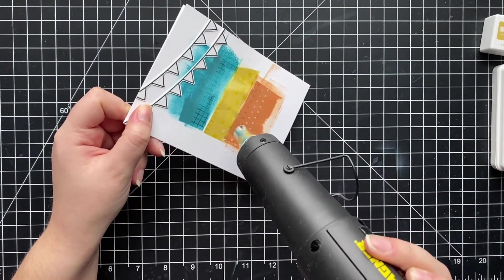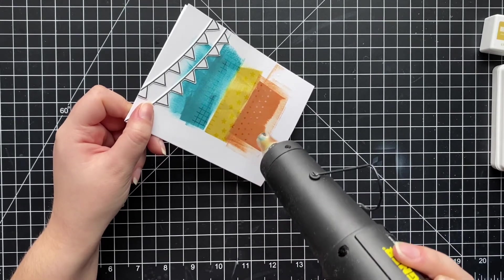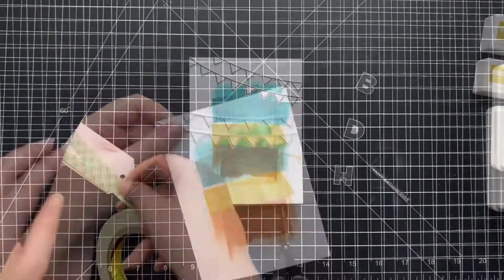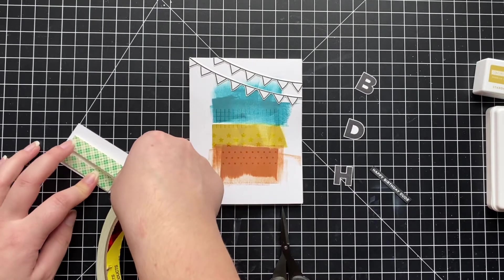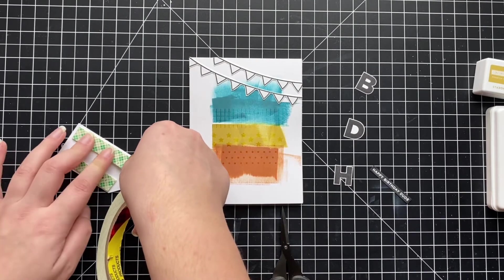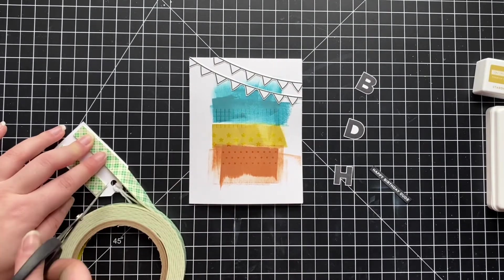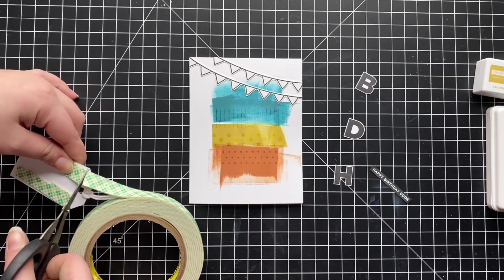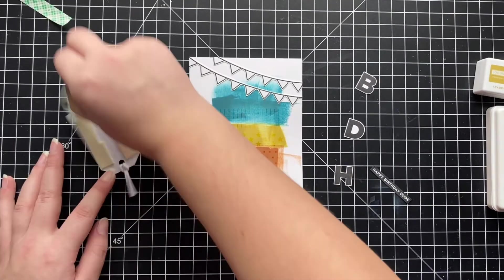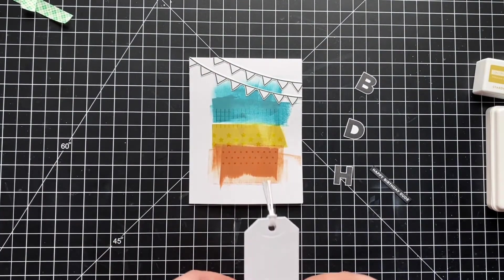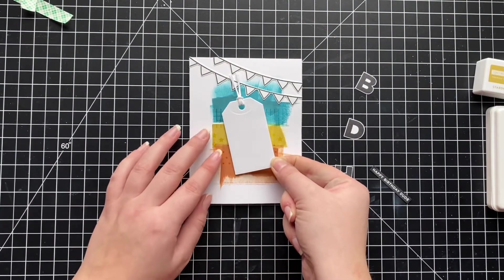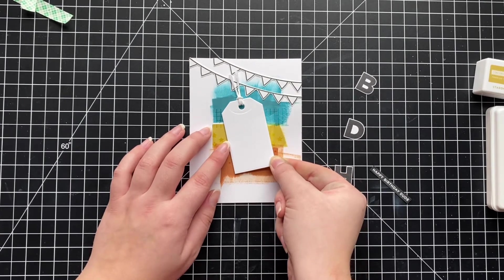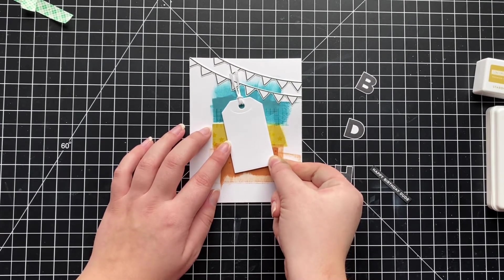And I just embossed that in clear embossing powder. I think it just adds a really detailed touch to the card. It would also be pretty if you heat embossed it in white, but I didn't want it to be, I just wanted it to be really subtle. So now I'm popping up the tag on the card using some foam tape. Dimension is life. Who says that? I think Laura Basson says that. Anyway, I'm following her style here, pop it up.